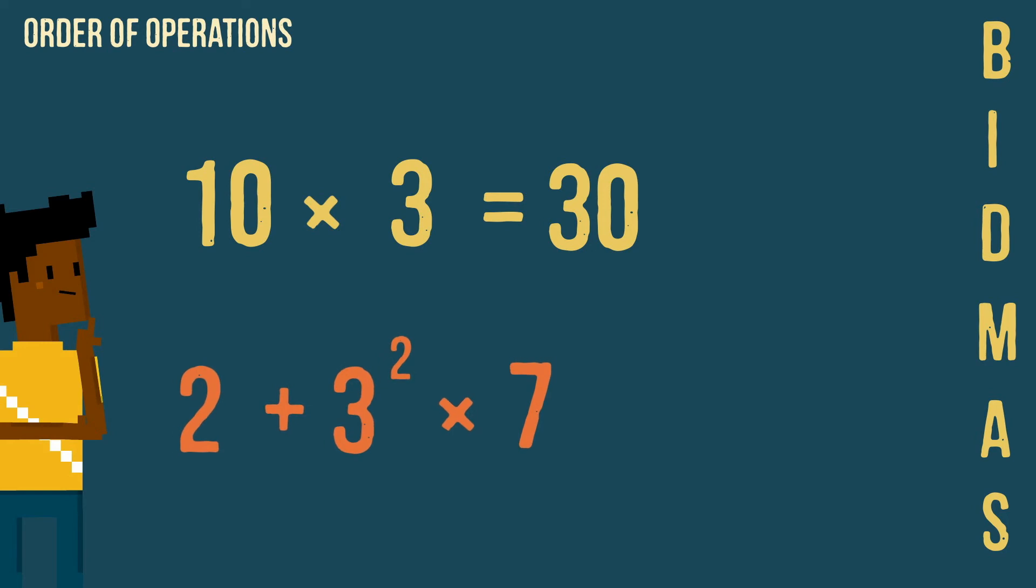For this example, there are no brackets, however there is an index number so we work this out first. There is no division but there is a multiplication so we work this out followed then by the addition.